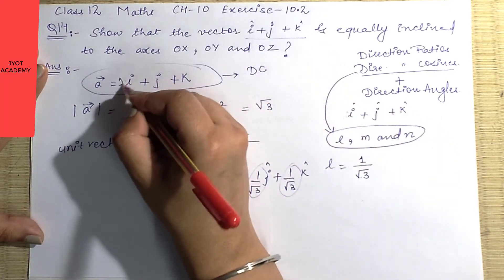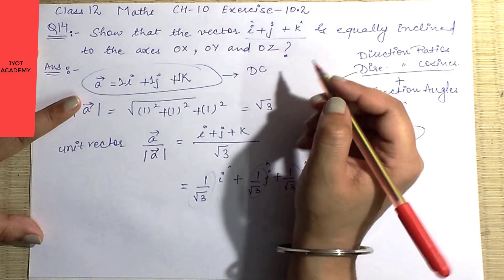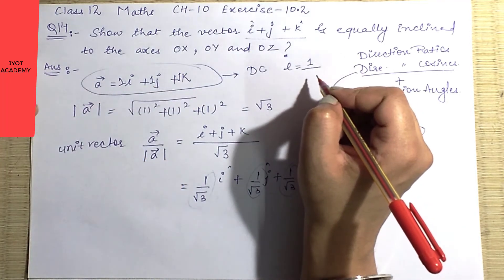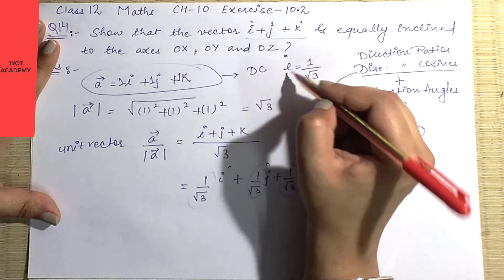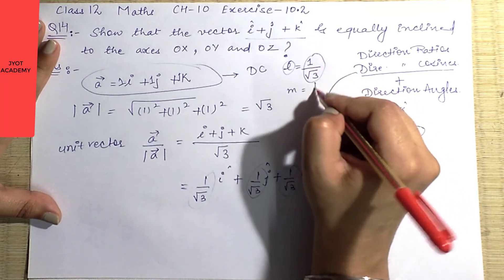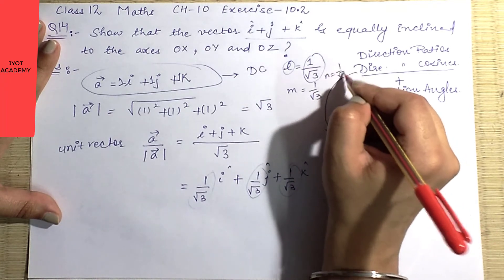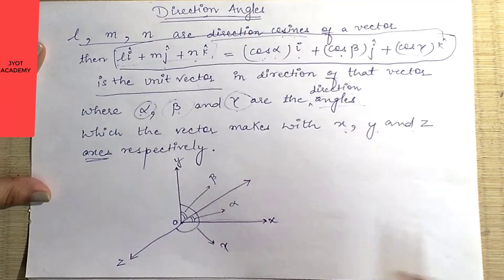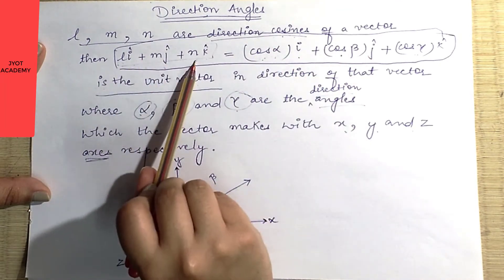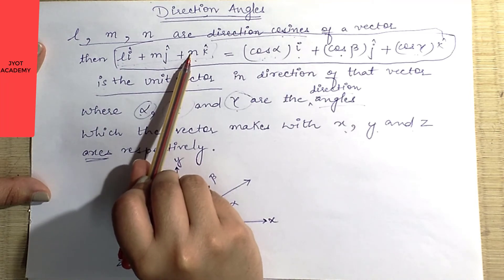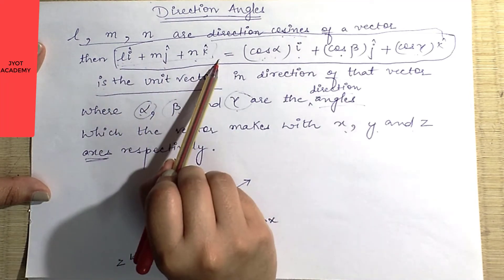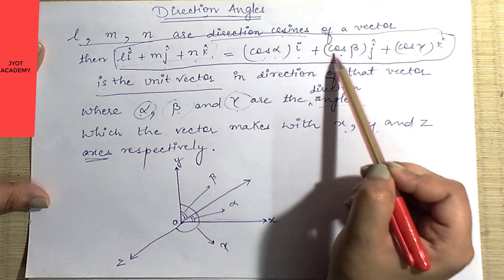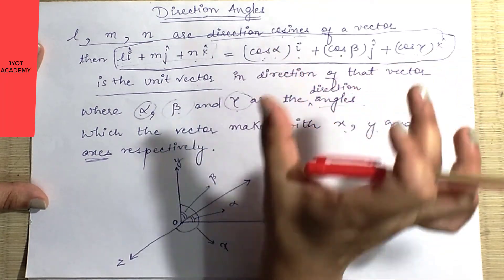The direction ratio here is 1, 1, 1. So l = 1/√3, m = 1/√3, n = 1/√3. According to the definition, the unit vector equals l i + m j + n k, which equals cos α i + cos β j + cos γ k. So cos α = cos β = cos γ = 1/√3, meaning all direction angles are equal.